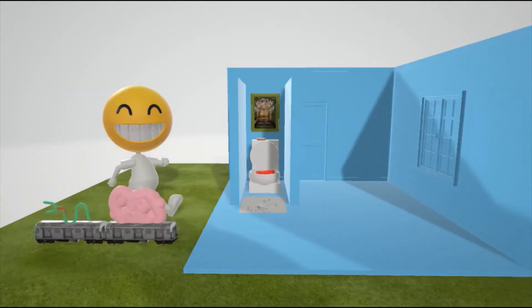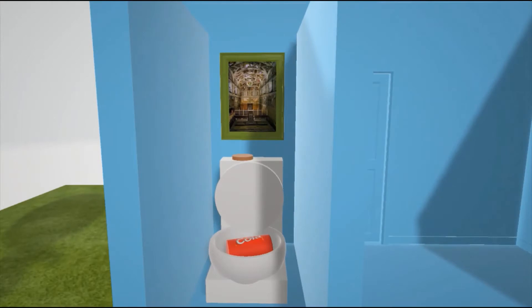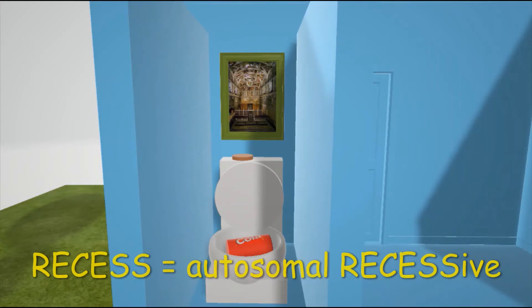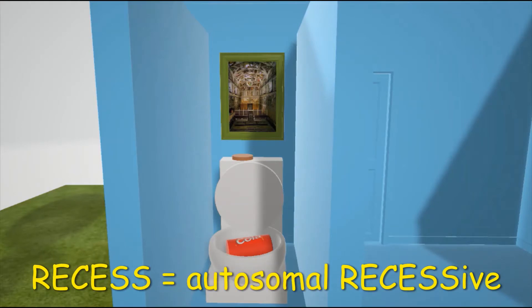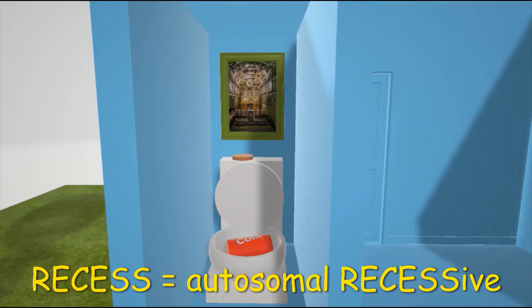This is our scene on Cystinuria, represented by the Sistine Urinal, as there's a picture of the Sistine Chapel on the wall of this urinal. Before we go any further, we note on top of the toilet there's Reese's Chocolate. Reese's Chocolate shows up in our autosomal recessive videos, as Cystinuria is inherited in an autosomal recessive fashion.